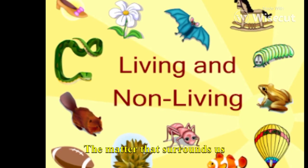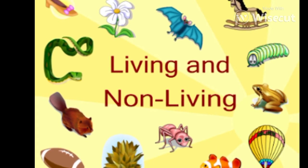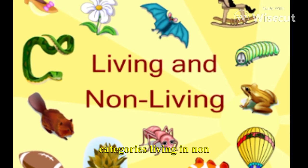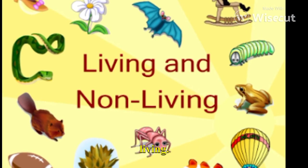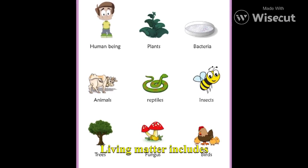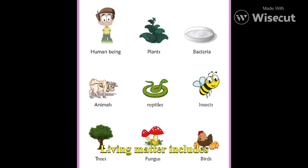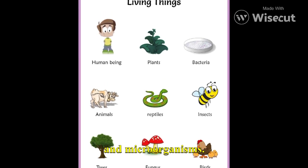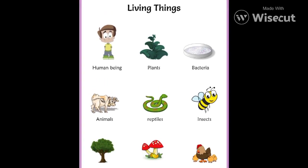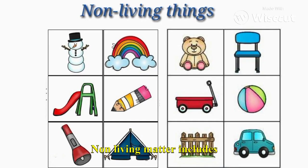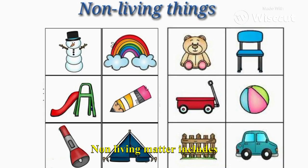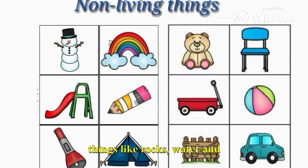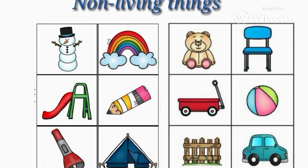The matter that surrounds us can be divided into two categories: living and non-living. Living matter includes things like plants, animals, and microorganisms. Non-living matter includes things like rocks, water, air, and inanimate objects.